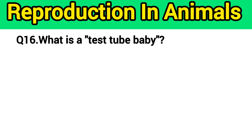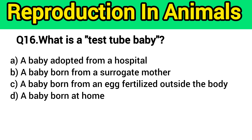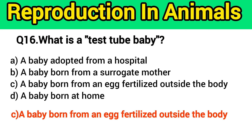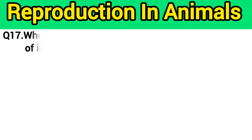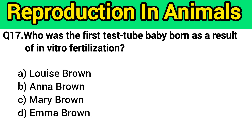Question number 16: What is a test tube baby? The right answer is option C — a baby born from an egg fertilized outside the body. Question number 17: Who was the first test tube baby born as a result of in-vitro fertilization? The right answer is option A — Louise Brown.